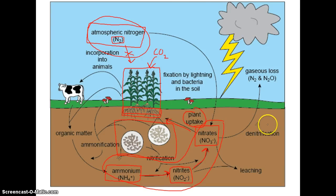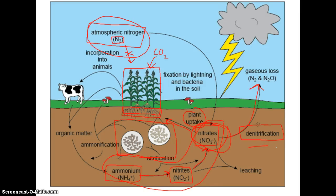Then we have the opposite process: denitrification. Denitrification takes nitrogen compounds now in the soil and turns them back into gaseous nitrogen that can be released back into the atmosphere. So nitrogen fixation takes nitrogen from the air and makes it usable for plants, while denitrification takes that usable nitrogen and converts it back into the gaseous form found in our atmosphere.